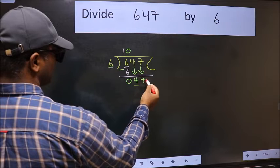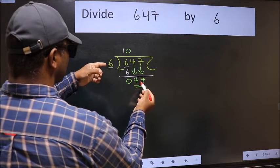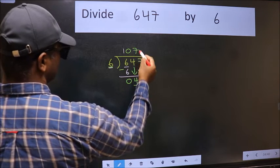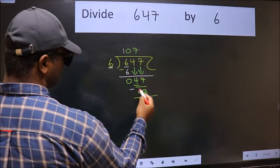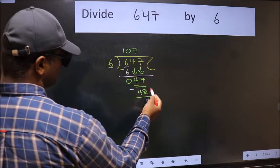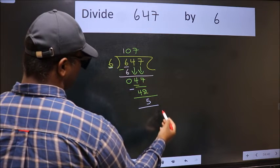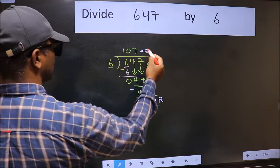Now we have 47. A number close to 47 in the 6 table is six sevens, which is 42. Now we subtract and get 5. No more numbers to bring down, so we stop here. This is our remainder and this is our quotient.